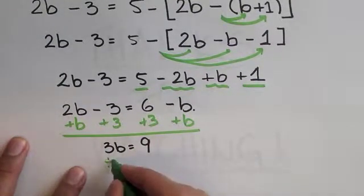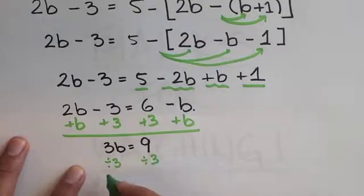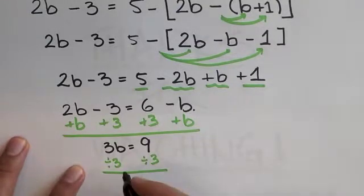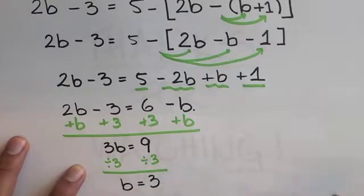When you perform these operations, you get 3b on the left side and 9 on the right side. Finally, we're going to divide by 3 on both sides, allowing us to receive b on the left and 3 on the right, meaning that b is equal to 3.